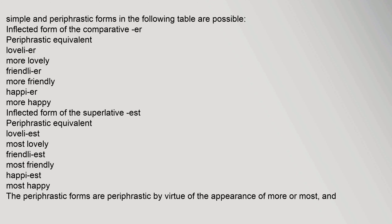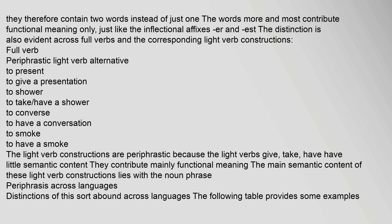Both the simple and periphrastic forms in the following table are possible. Inflected comparative forms versus periphrastic equivalents: 'lovely' or 'more lovely', 'friendly' or 'more friendly', 'happy' or 'more happy'. Superlative inflected forms versus periphrastic equivalents: 'loveliest' or 'most lovely', 'friendliest' or 'most friendly', 'happiest' or 'most happy'. The periphrastic forms are periphrastic by virtue of the appearance of 'more' or 'most'.